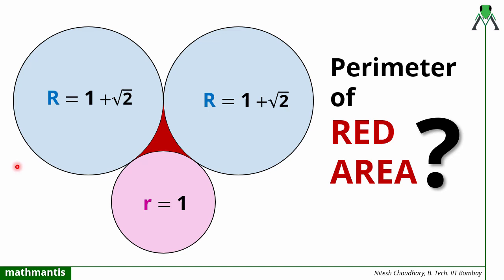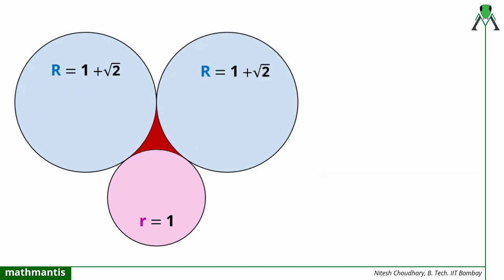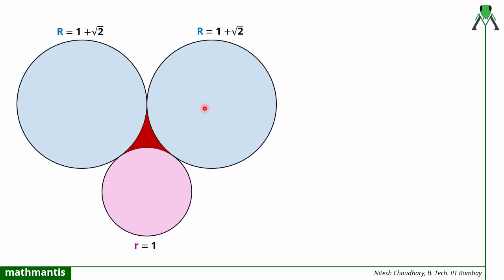Hello everyone, welcome back to my channel Mathematics. In this question we have been given three circles touching each other externally, and there is a red region area bounded by all three circles. We have to find the perimeter of this red area. Out of these three circles, two circles have radii equal to 1 plus root 2, and the third circle radius is equal to 1. We will use the concept of circles touching each other externally.